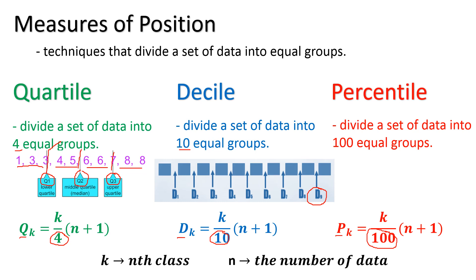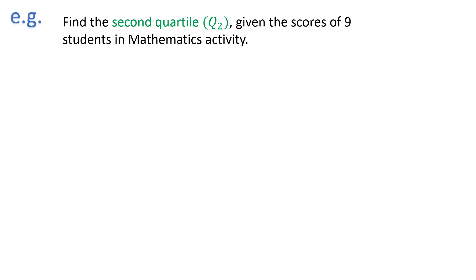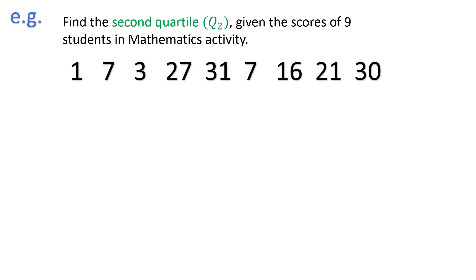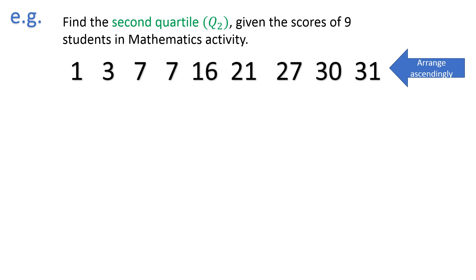Find the second quartile — also known as the median — given the scores of 9 students in a mathematics activity. Whenever computing for a measure of position, the data should be arranged ascendingly. Therefore, the arrangement is: 1, 3, 7, 7, 16, 21, 27, 30, 31. Once done arranging, we may now start computing for the second quartile.